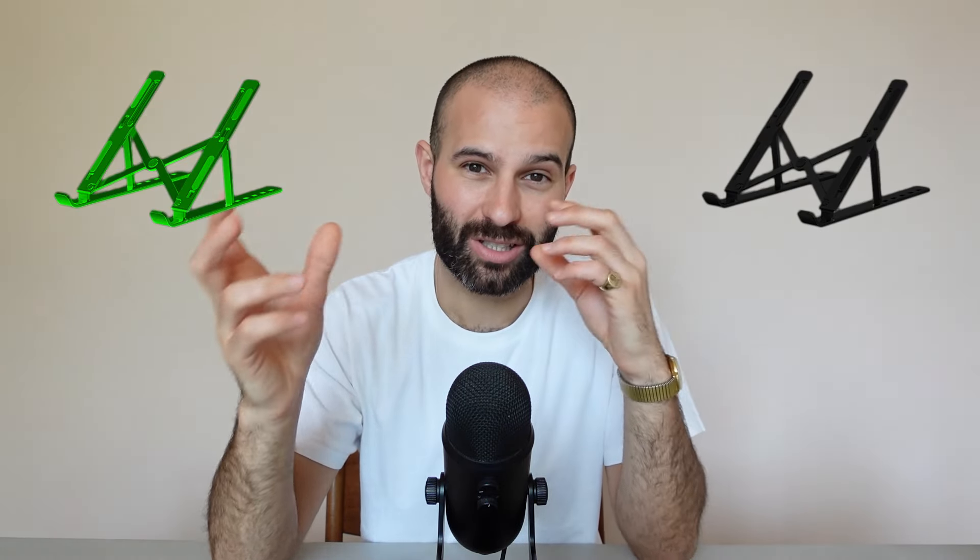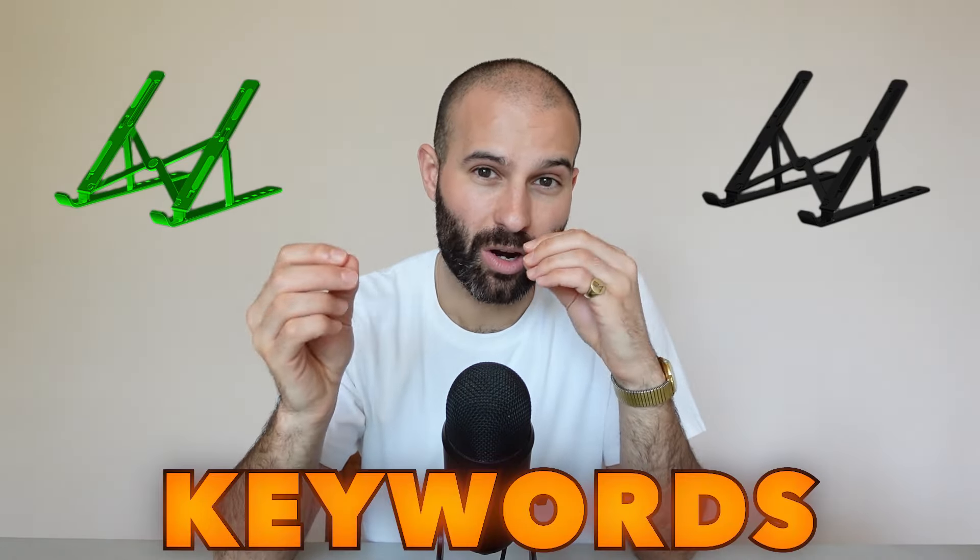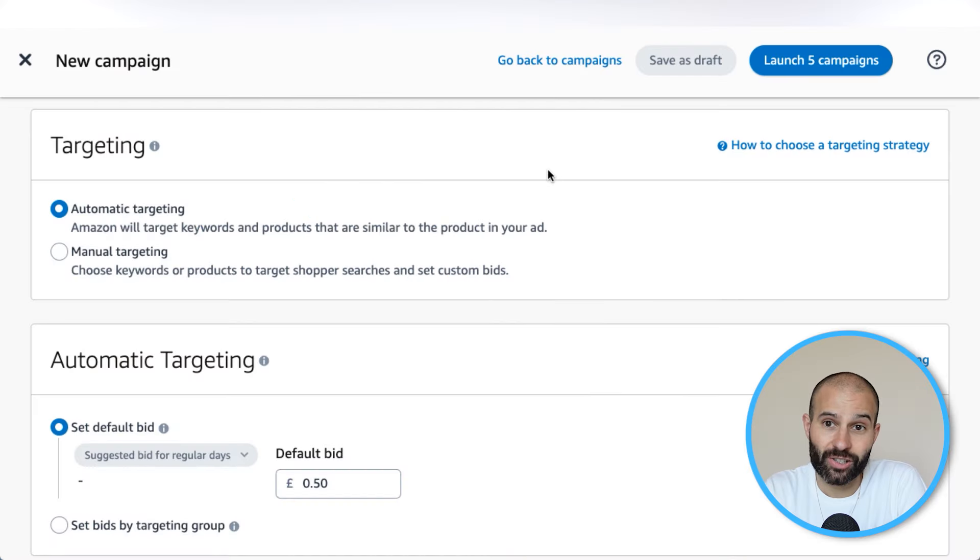You can advertise multiple products in an ad group, but typically you'll only want to advertise one ASIN per ad group. The reason is you want your targeting to be as specific and relevant as possible. Even if all your products are laptop stands, a wooden, metal, black, or green laptop stand will have slightly different keywords you want to target, so it's better to have one product per ad group.